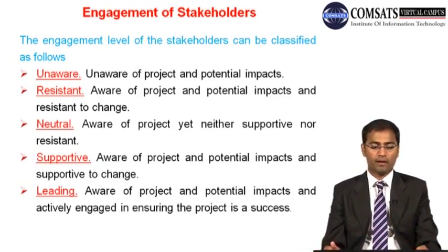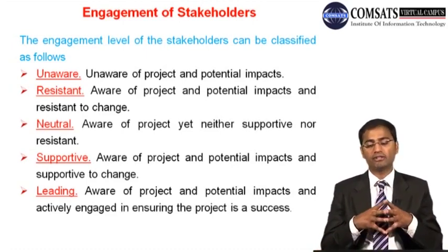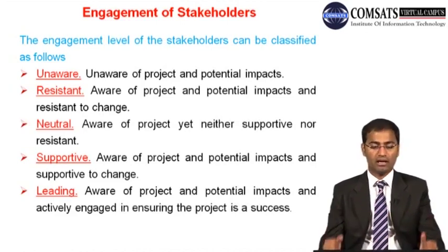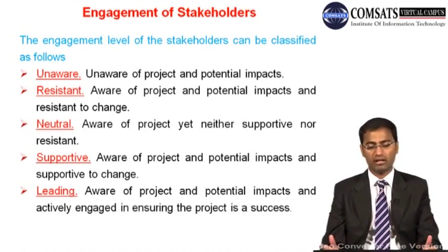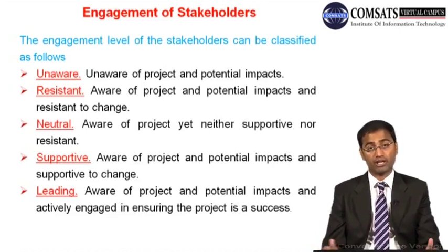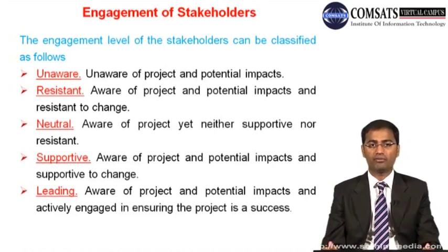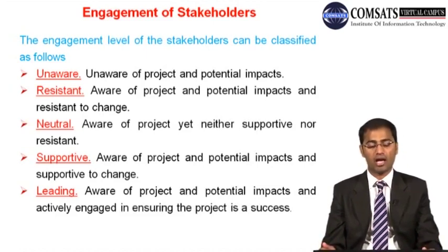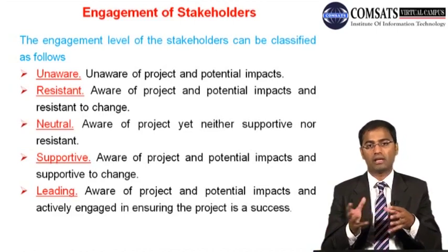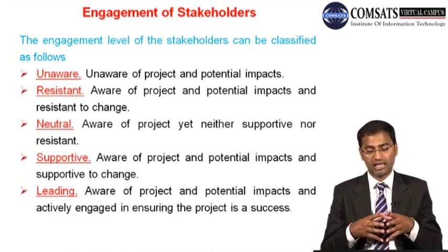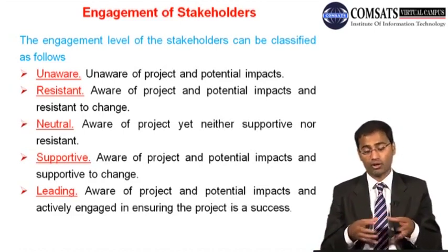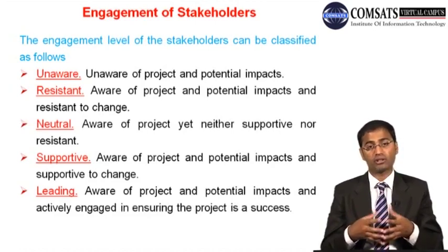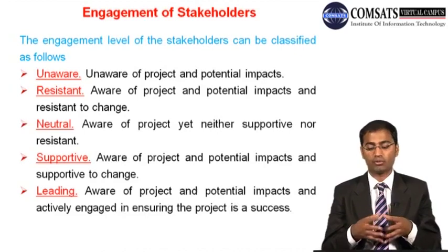After going through identification, understanding the context, carrying out analysis, and reviewing grids like the power-impact and power-influence grids, we come to the engagement level of stakeholders. Engagement levels can be classified as: unaware — stakeholders unaware of the project and potential impacts; resistance — aware of the project and potential impacts but resistant to change; neutral — aware of the project yet neither supportive nor resistant; supportive — aware of the project and potential impacts and supportive to the change; and leading — aware of the project and actively engaged in ensuring the project is a success.